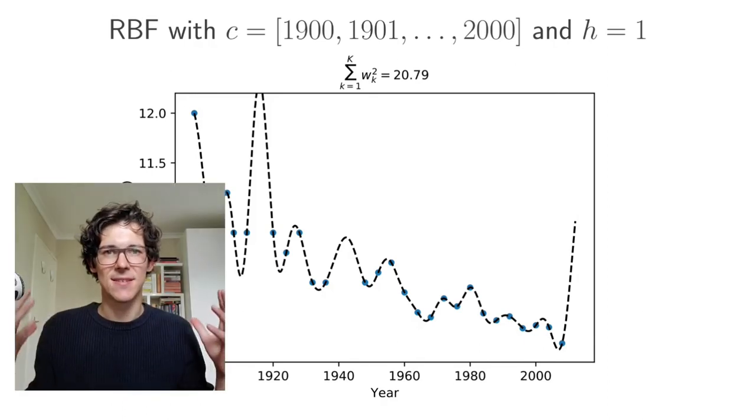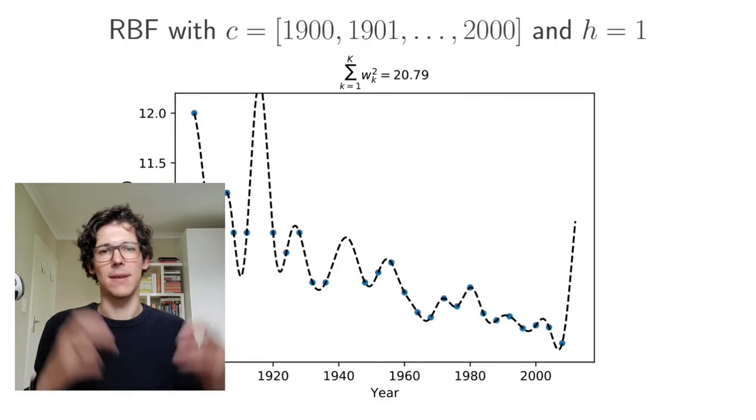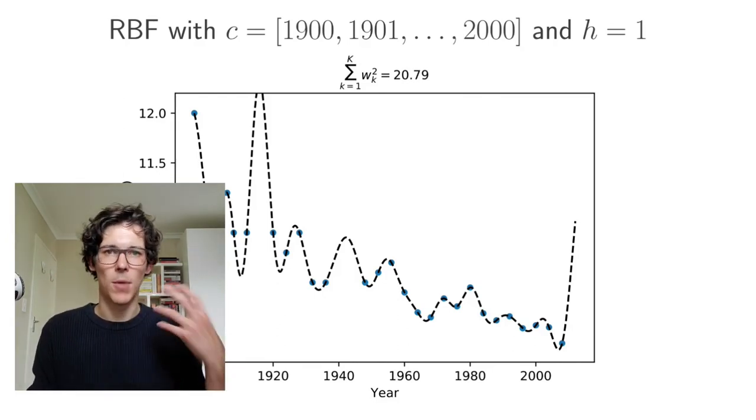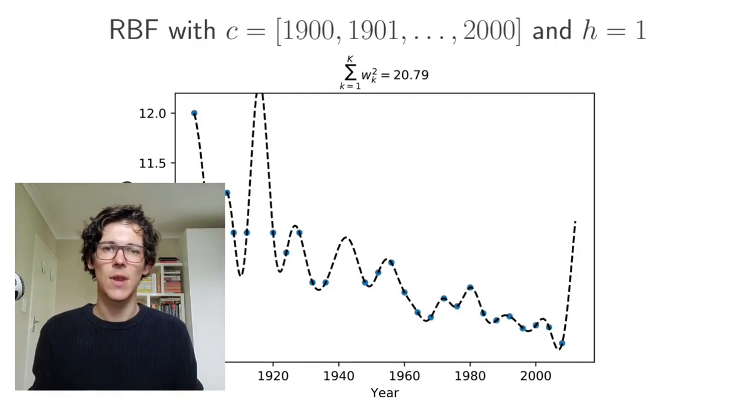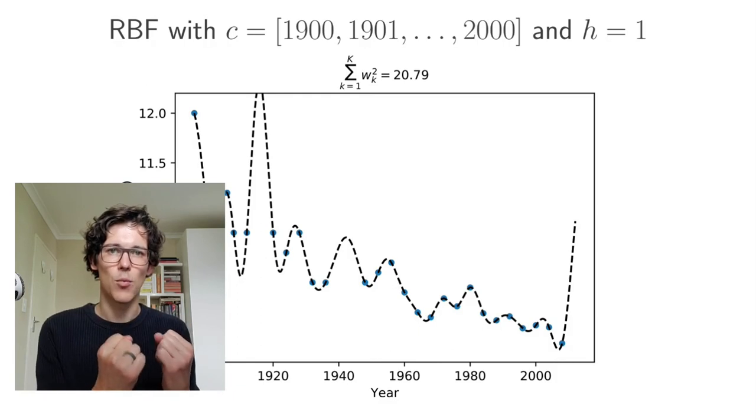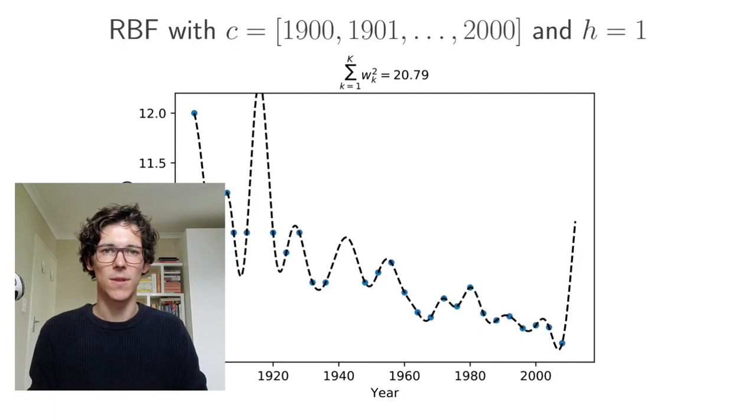So I hope you're convinced that this problem of overfitting actually exists, that it actually happens, especially when we make a model complex, right? When you have a higher order polynomial model or a model that has a very large family of radial basis functions. In the next video, we're going to look at regularization, which is one way in which we can still have, for example, a model with 101 radial basis functions, but we will constrain the model in some way so that it doesn't make these extreme predictions like the ones that we're seeing on this slide.